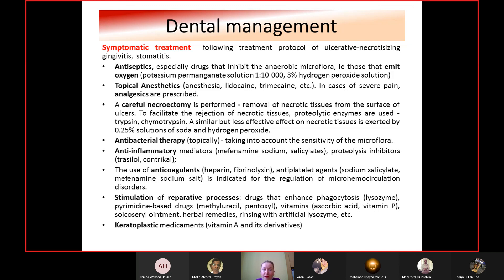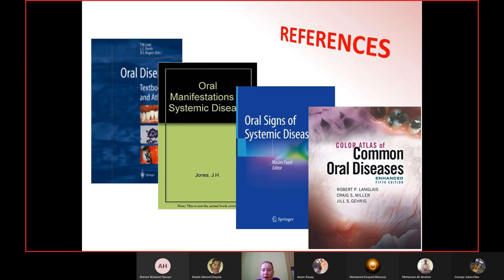Each case should be treated as unique, and medicaments chosen accordingly. Recommended references include an oral diseases textbook and atlas, a book on oral manifestations of systemic diseases, oral signs of systemic diseases by Springer, and a color atlas of common oral diseases. Thank you for attention and good luck.